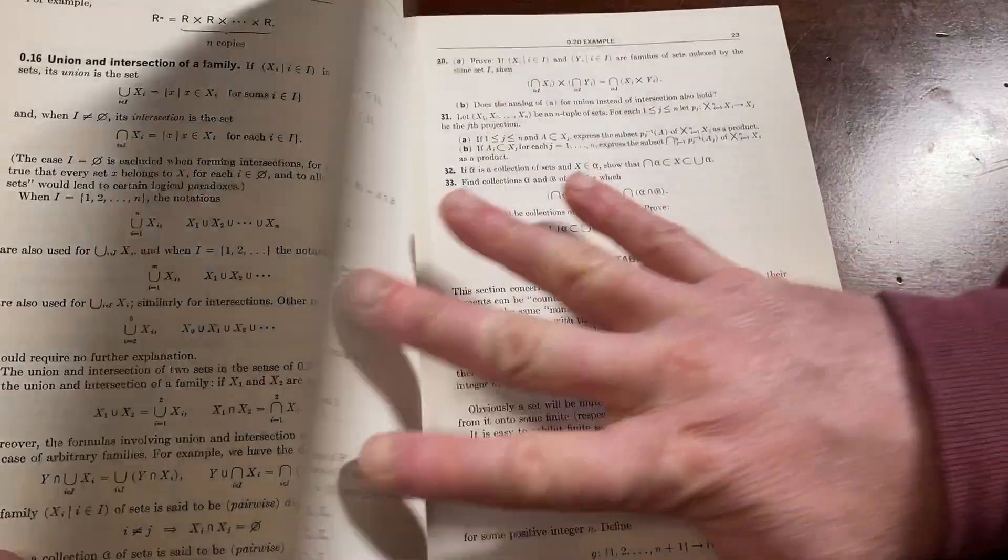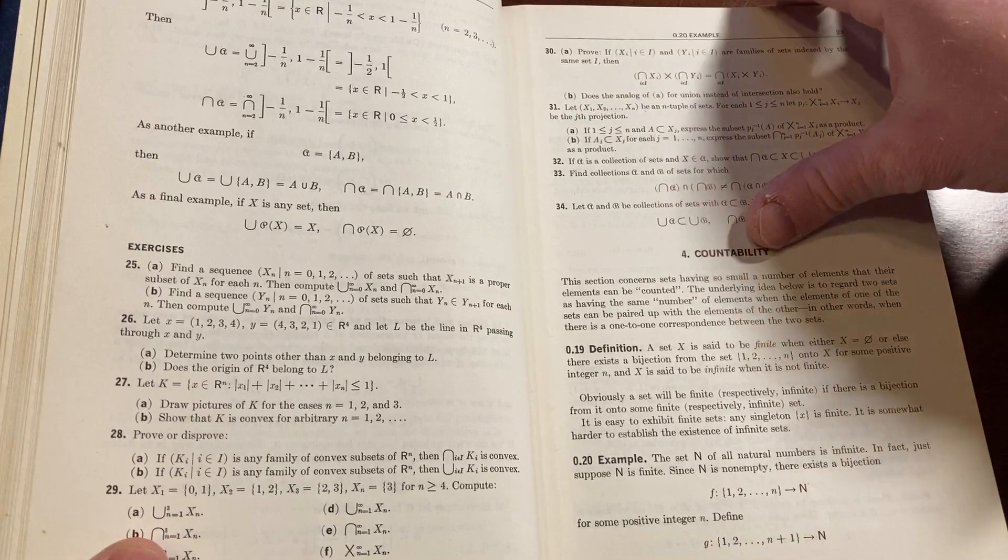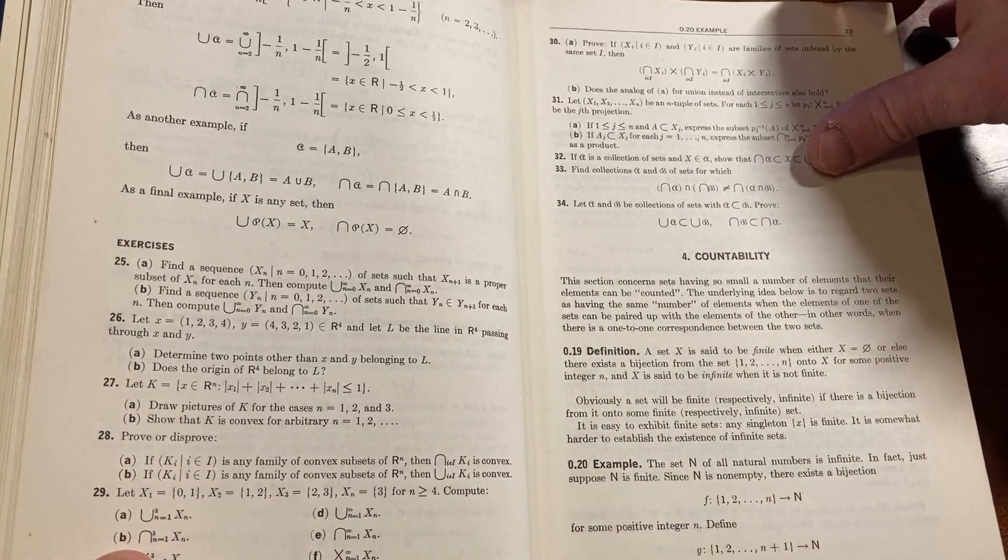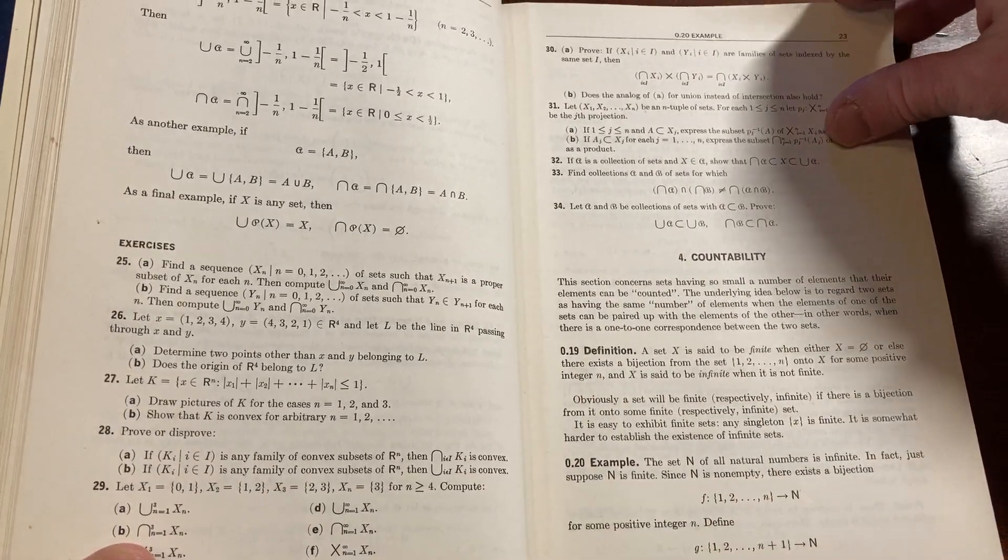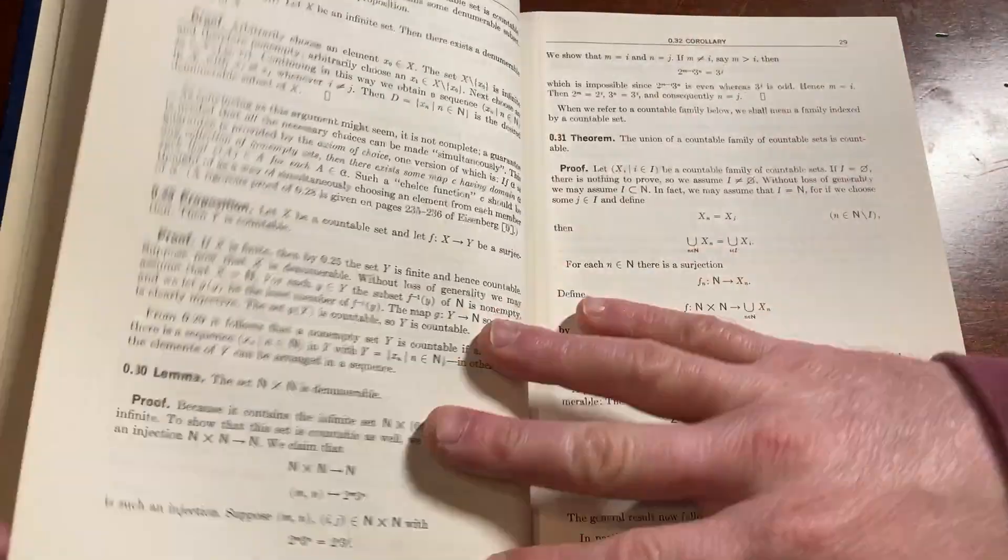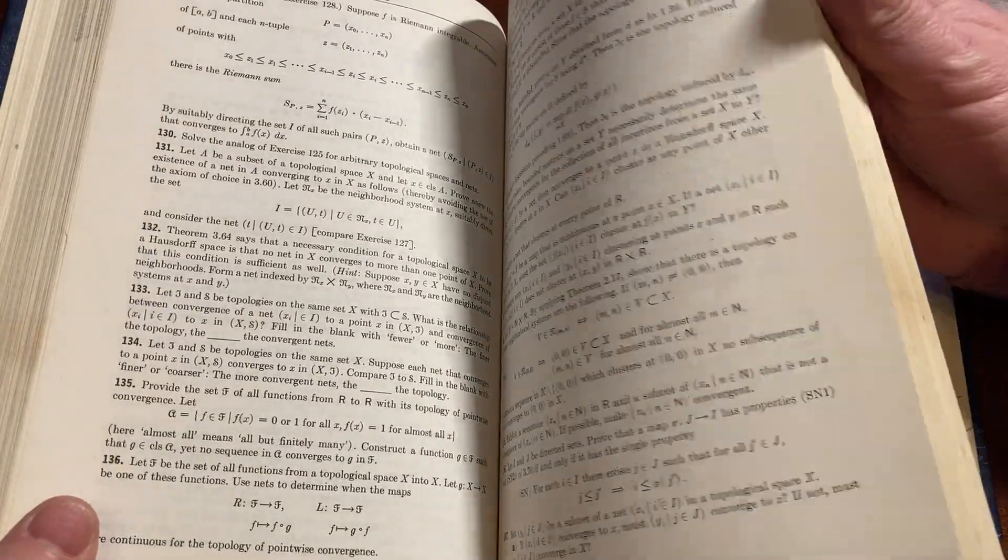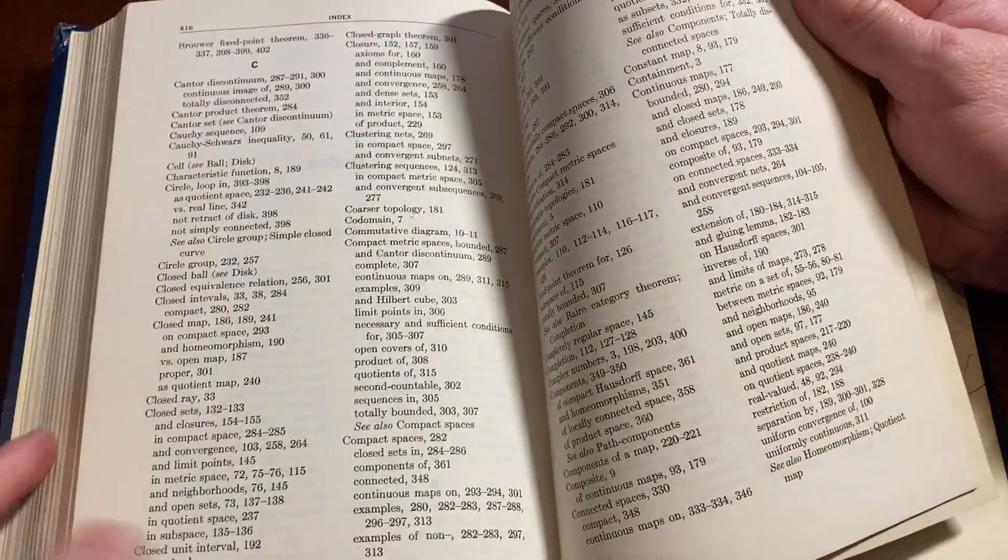We're not even to the topology yet, right? We're just, this is still the introductory stuff. This is the preliminaries. It's great. Look at all this stuff. So much mathematics. I don't believe this book has answers. Let's just jump to the back. I don't think it does. Pretty sure it doesn't.